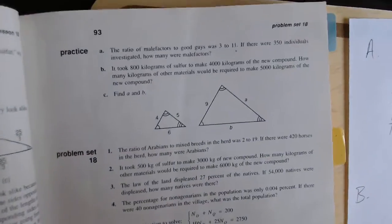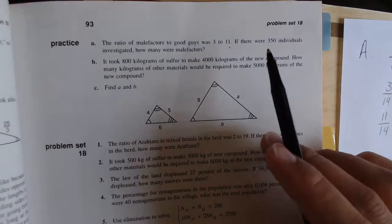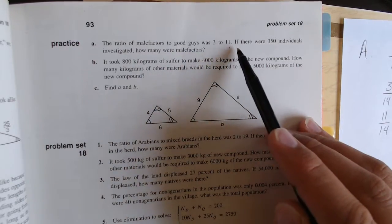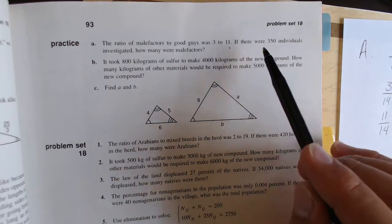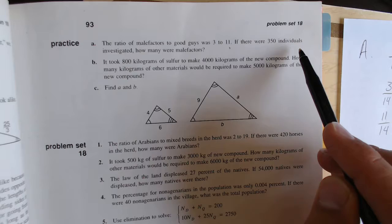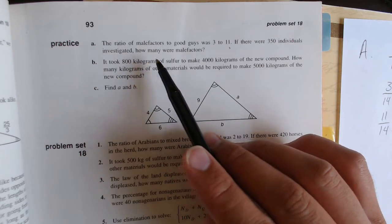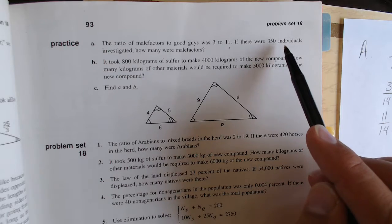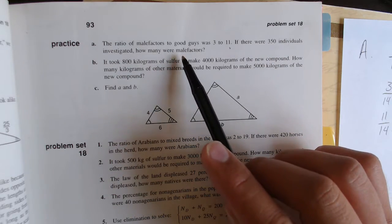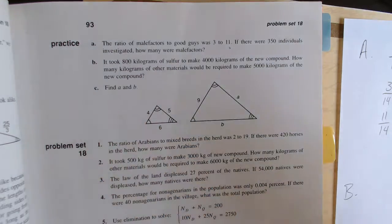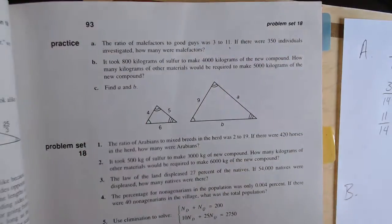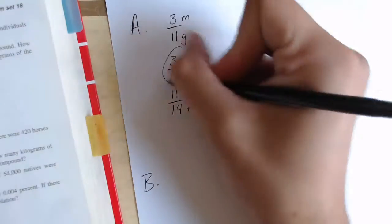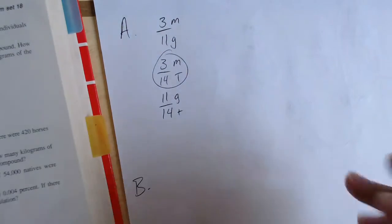Now, if we go back to the problem, since they tell us the ratio of part A to part B was 3 to 11, then we know that those are parts. What they tell us after that is that there's 350 individuals investigated. So that's giving us the total. So 350 is our total number, and they want to know how many are M, or malefactors. So we have to look back at our ratios and figure out which one deals with the total and the M. Well, that would be this ratio right here. So that's the one we're going to use.